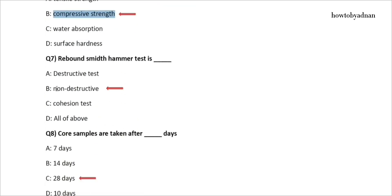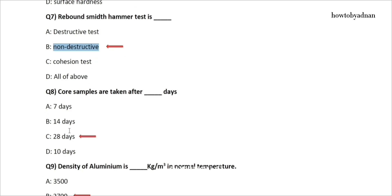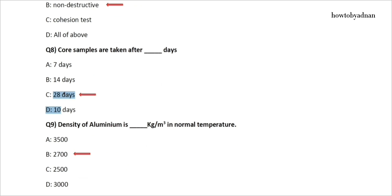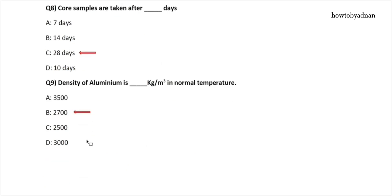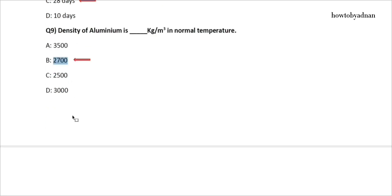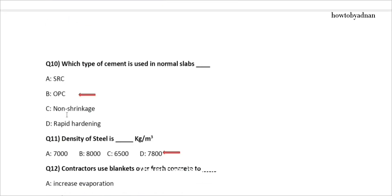Question 8: Core samples are taken after how many days? The answer is option C: 28 days. Question 9: The density of aluminium is how many kg per cubic meter at normal temperature? The answer is option B: 2,700. Question 10: Which type of cement is used in normal slabs? The answer is option B: OPC.